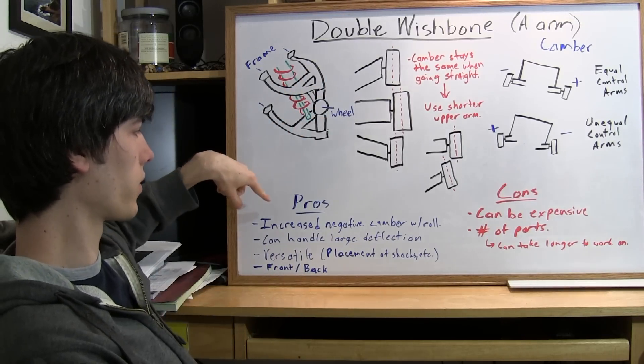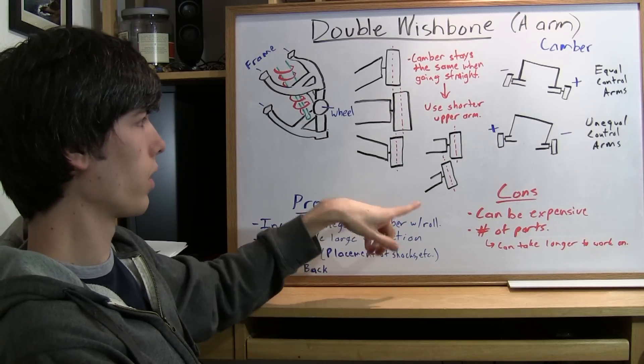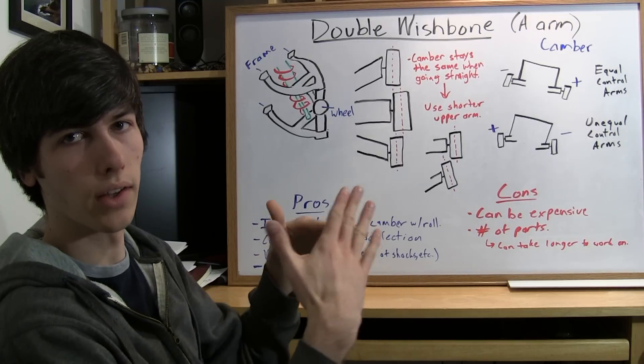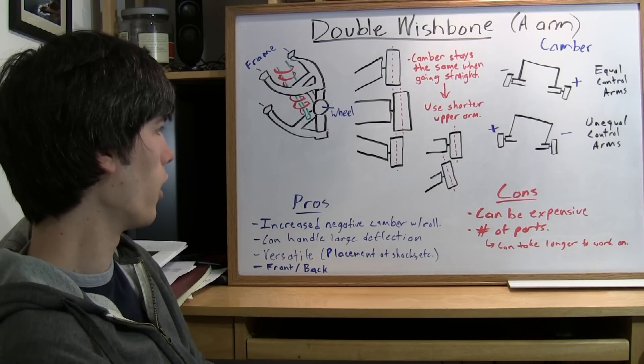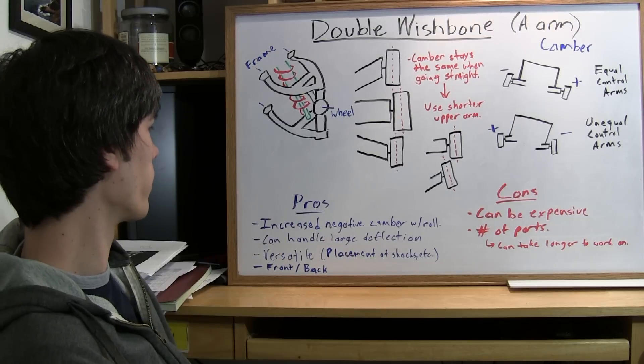Some of the advantages, as I've discussed, you have increased negative camber with roll control. So as you roll more, your negative camber increases, and it matches it, so that you're always having fantastic contact with the road. And not all suspensions can do that. So that's one advantage of this one.